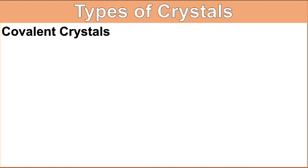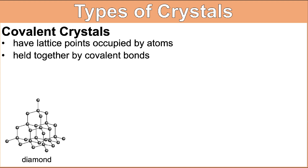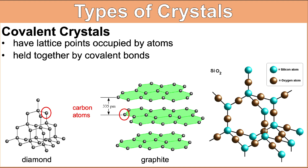Now let's go to covalent crystals. Covalent network crystals are made of atoms in which each atom is covalently bonded to its nearest neighbors. The atoms can be of one type — for example, carbon in diamond and carbon in graphite — or different atoms, such as in silicon dioxide (SiO₂), which is made up of silicon and oxygen atoms. In a network solid, there are no individual molecules, and the entire crystal may be considered one very large molecule. Formulas for network solids, like those for ionic compounds, are simple ratios of the component atoms — that is, empirical formulas.